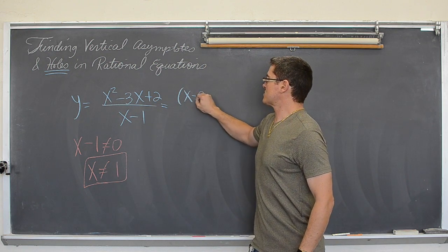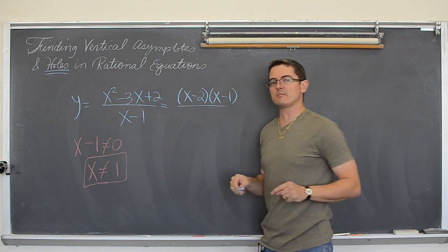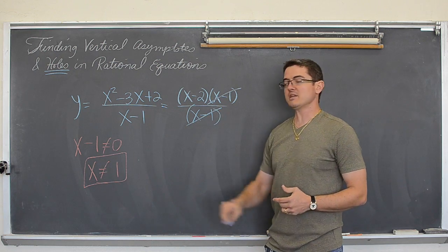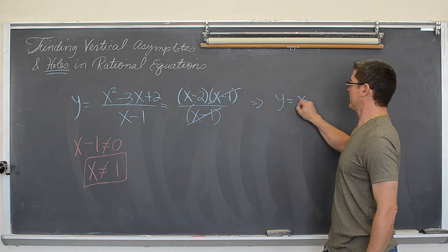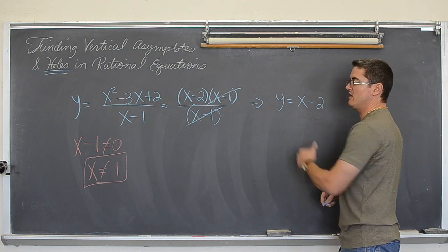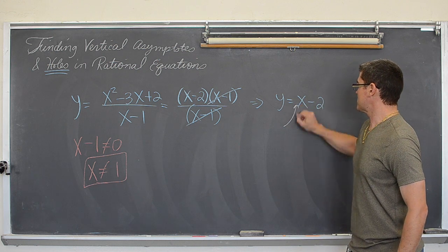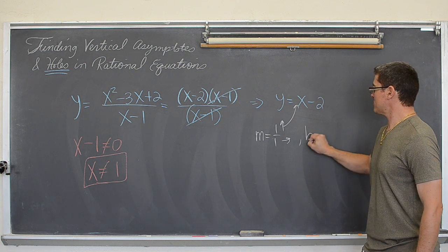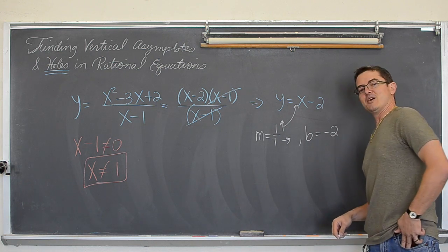This top trinomial factors. The top will factor to be x minus two times x minus one. That's over x minus one. And now, see my x minus one is factoring out. My simplified version of this equation is y equals x minus two. Well that's y equals mx plus b. This is slope intercept form. This is simply the equation of a straight line. So I can graph this by going, the slope is equal to one over one. So that's going to be up one and over one. The y intercept, or b, is equal to negative two. And that means this line is going to cross the y axis at negative two. You always do your y intercept first. So it's going to cross at negative two.